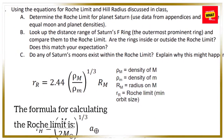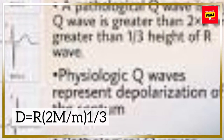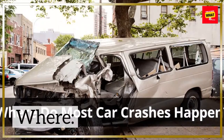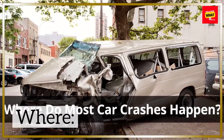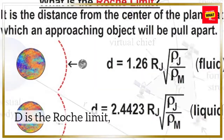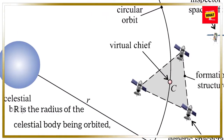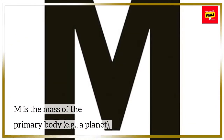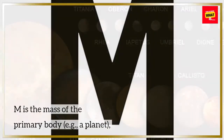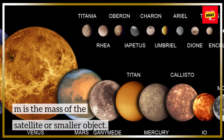The formula for calculating the Roche limit is D = R × (2M/m)^(1/3), where D is the Roche limit, R is the radius of the celestial body being orbited, M is the mass of the primary body (e.g., a planet), and m is the mass of the satellite or smaller object.